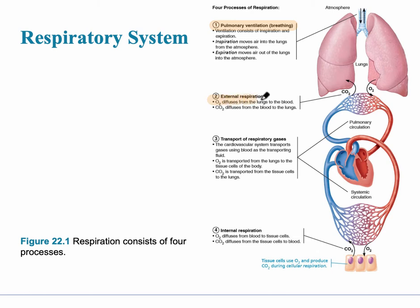Then there's the exchange of oxygen and carbon dioxide that goes on at the pulmonary capillaries — this is the external respiration. Then the oxygenated blood is pumped through the heart and travels to the entire body, which is the transport of the respiratory gases.